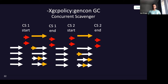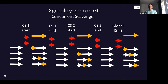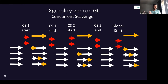We also have what we call the global marking phase. The concurrent scavenger only collects the new space of the heap, so you might ask — when do we collect the old space? That's where the global marking phase comes in. It concurrently marks the tenure space every once in a while, because the idea of GenCon is that new objects die young.